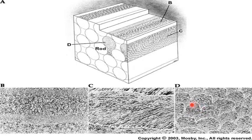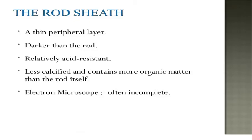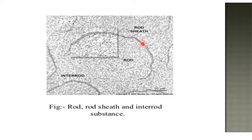This is the keyhole appearance — this represents the enamel rod and the tail between two adjacent enamel rods represents the interrod substance. This lighter area represents the rod sheath. The rod sheath is a thin peripheral layer, darker than the rod, relatively acid-resistant, less calcified, and contains more organic matter than the rod itself. This is the structure of the enamel.